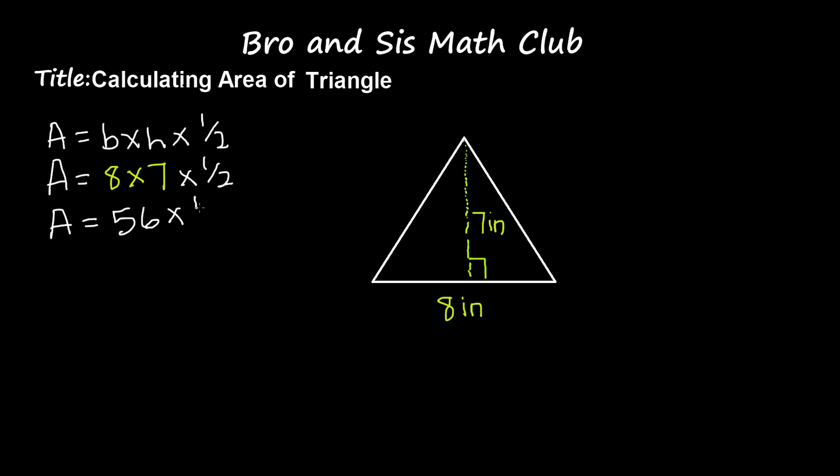And then, remember, we have to multiply 56 by one-half. So, 56 times 1 over 2. 56 times 1 is 56, and then divided by 2 gives us 28.